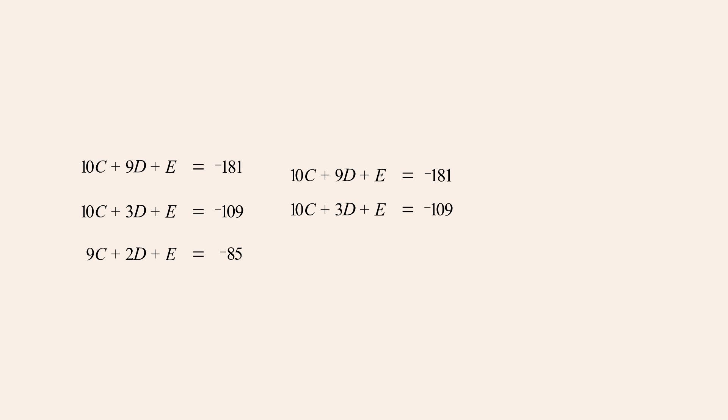Multiplying the bottom equation by negative one and adding the equations, we get 6d equals negative seventy-two. Or dividing by 6, d equals negative twelve.